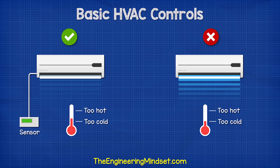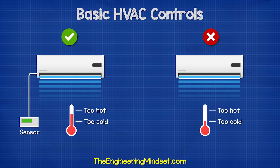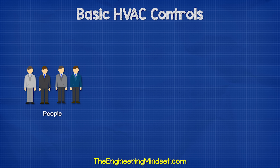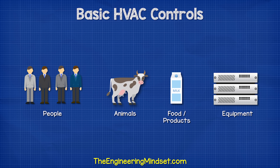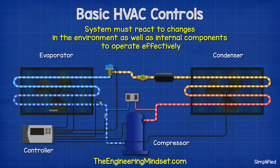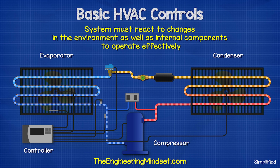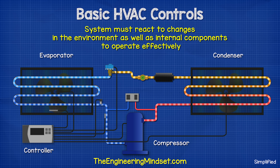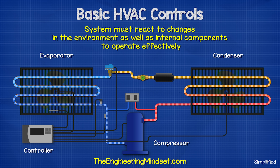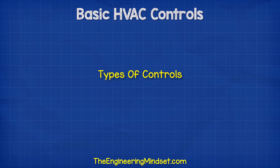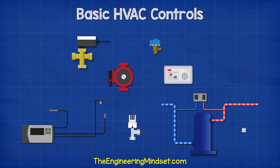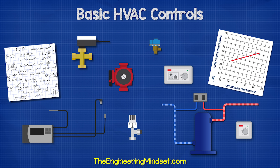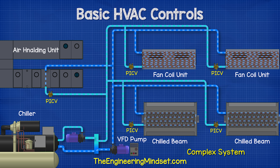The HVAC system needs to react to these changes to maintain comfortable and safe conditions for people, animals, food and products, equipment, etc. The system consists of many components, and as one component reacts to a change, it will often impact another part of the system. So we need controls to automatically sense a change and act upon this. There are many types of controls, as well as methods of controlling systems and components in our HVAC systems. These will range in complexity, and we will go through the basics now.